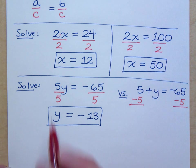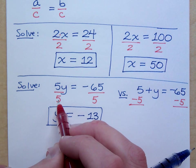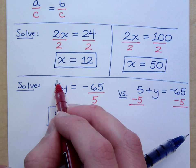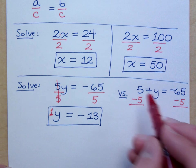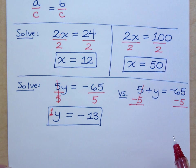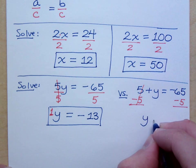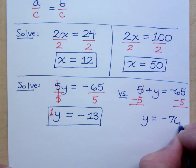Look what happens. On the left side, 5 minus 5 gives me 0, which is what I'm supposed to have, so that the only term left is y. So then here, y equals negative 70.